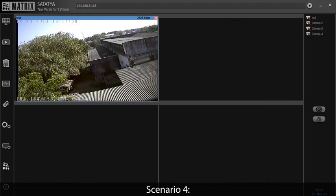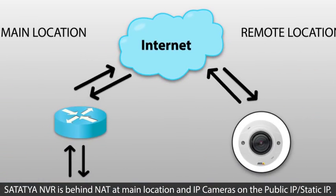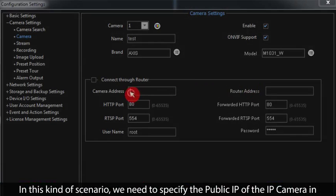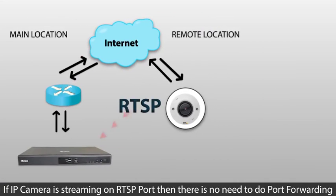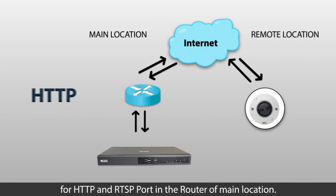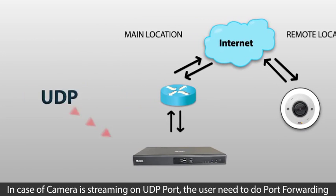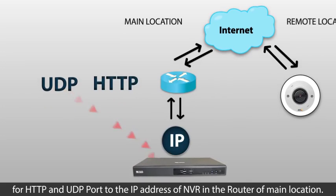Scenario 4: Satatcha NVR is behind NAT at the main location and IP cameras are on a public or static IP. In this scenario, we need to specify the public IP of the IP camera in the NVR camera configuration. If the IP camera is streaming on RTSP port, there is no need to do port forwarding for HTTP and RTSP port in the router of the main location. In case the camera is streaming on UDP port, the user needs to do port forwarding for HTTP and UDP port to the IP address of the NVR in the router of the main location.